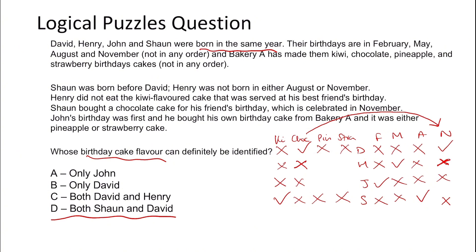One last point about logical puzzles — and this goes across all subtests — you have to think about which questions are going to be beneficial for you. Logical puzzles often take time, even with this method, because they can be very tricky. You have to ask yourself: is it worth spending a minute and a half or two minutes on a question when you may only get one mark? It may be more time-effective to spend your time on syllogisms or interpreting information. My personal strategy is to leave out logical puzzles on my first pass and return to them, since they simply aren't as cost-effective as syllogisms or interpreting information.